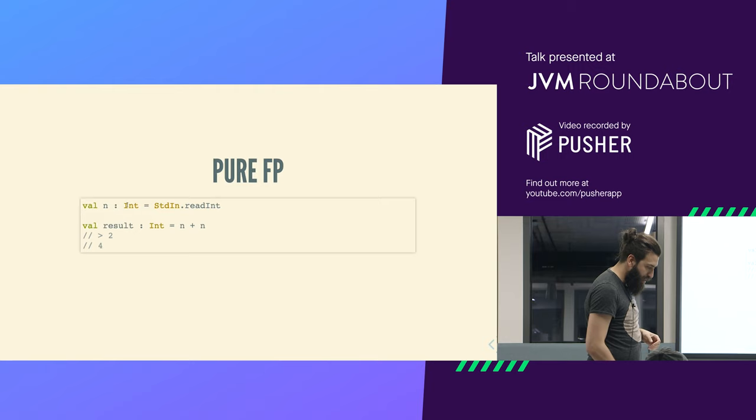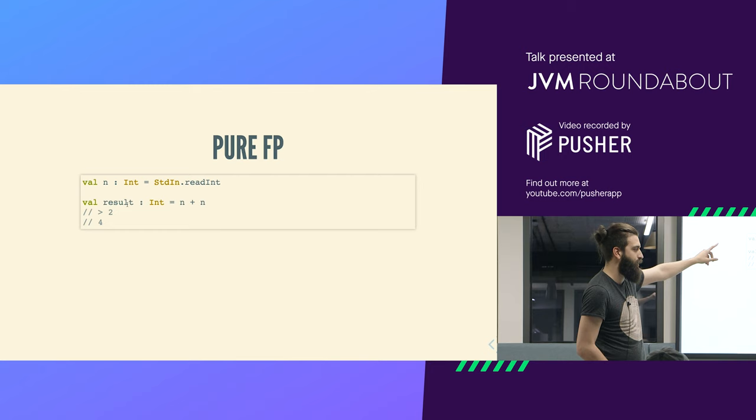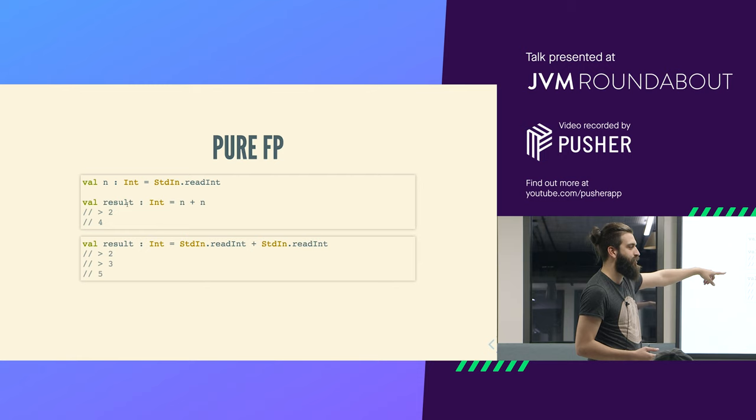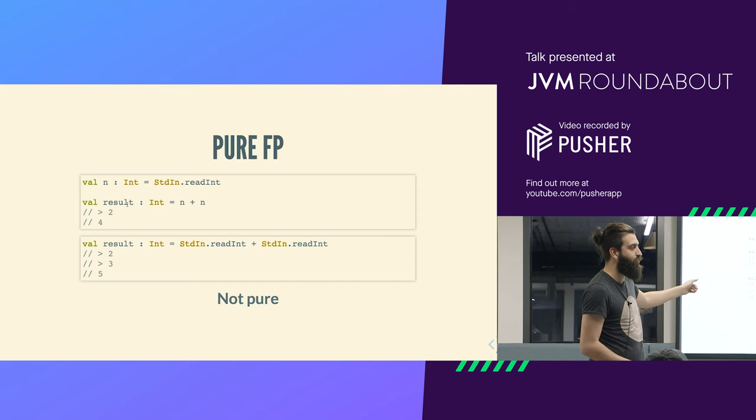But now what if I have this side effectful thing - StdIn.readInt - and I read into an int and then I sum the two ints. Let's say I input 2 and then I sum it to itself, then it's going to be 4. Now let's do the same substitution to see if our code is purely functional. Obviously it's different because now I'm going to do two StdIn.readInts and I'm going to read two numbers. So the behavior has changed when I replace the thing - the behavior has changed. So this is not pure, the property does not hold.